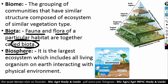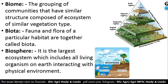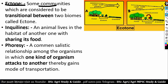Next is biosphere — it is the largest ecosystem, which includes all living organisms on Earth interacting with the physical environment. The biosphere involves interaction among the atmosphere, hydrosphere, and lithosphere. Next is ecotone — some communities which are considered to be transitional between two biomes are called ecotone.